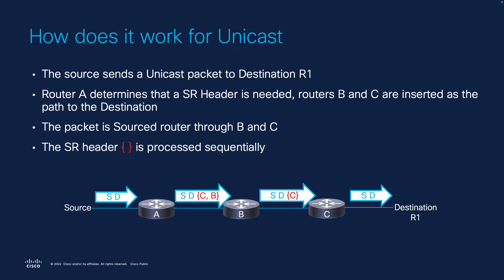The packet eventually reaches R1. However, this would not work on Multicast because at the replication node, if you have two receivers, the segment is ordered and cannot choose one of them.